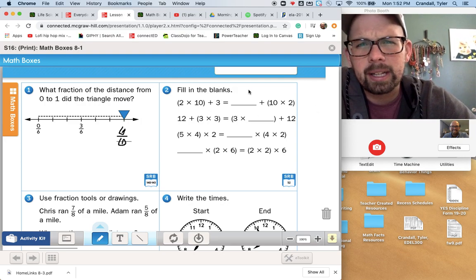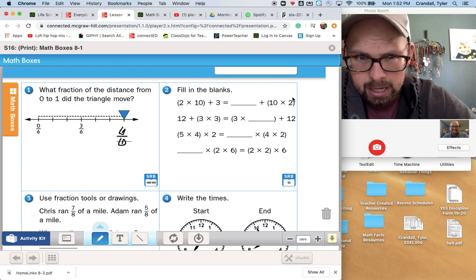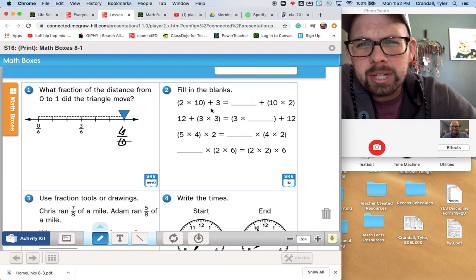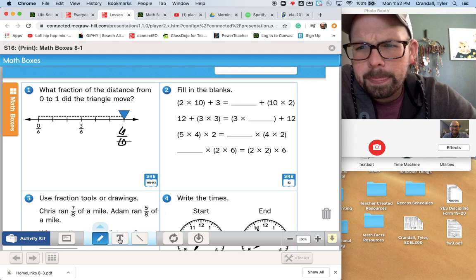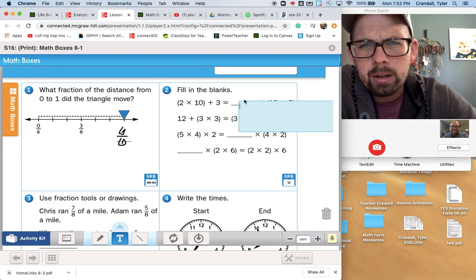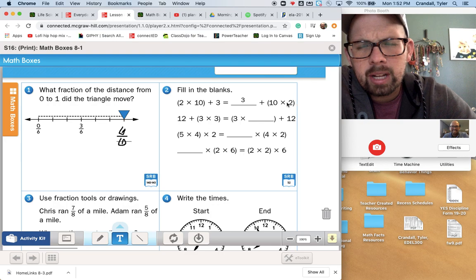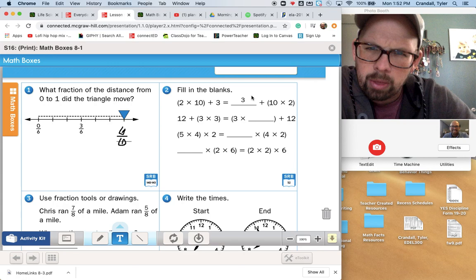This says fill in the blanks. 2 times 10 plus 3 is the same thing as something plus 10 times 2. So remember when you're doing equals, you want the two sides of the equation to be equal. So 2 times 10, and over here I see 10 times 2. Those are equal. Plus 3. So what should go in this first blank? I'm actually thinking we just need to put in a 3. Because 2 times 10 is 20 plus 3 is 23. 10 times 2 is 20 plus 3 would be 23. So the two sides are equal.